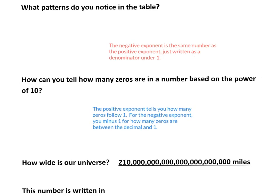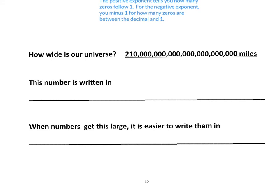Now we're asked: how wide is our universe? With this big number written out, we note that this number is written in standard form. The reason it's written in standard form is because you can see it written with all of the zeros and all of the commas — it's written in a very familiar form. It's a very big number, but it's a familiar form that we are aware of.